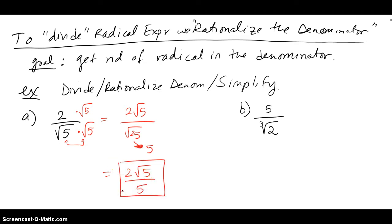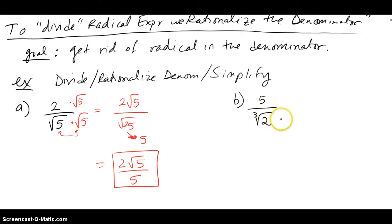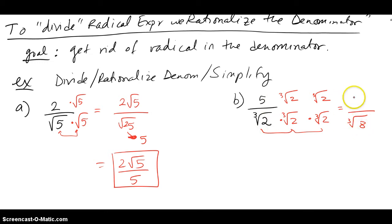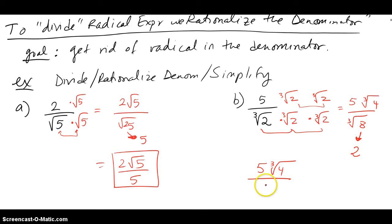Same idea for part B with a cube root. I don't like ∛2 in the denominator, so I multiply top and bottom by ∛4 (since ∛2 times ∛4 gives ∛8, a perfect cube). Now I get ∛8 in the denominator, which pops out a nice 2, and 5∛4 in the numerator. The answer is 5∛4 over 2.